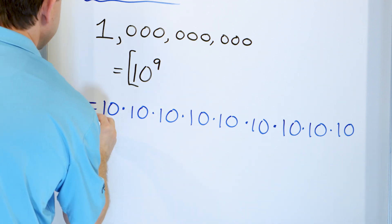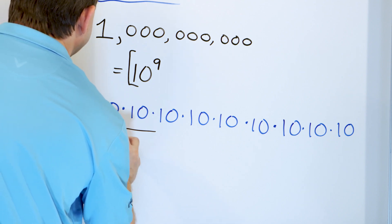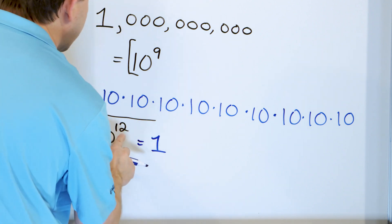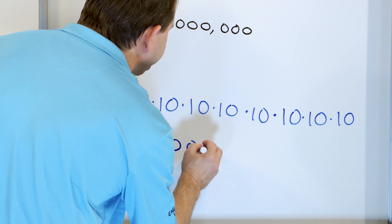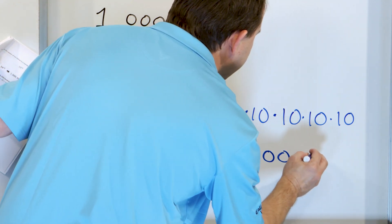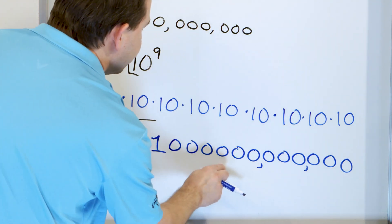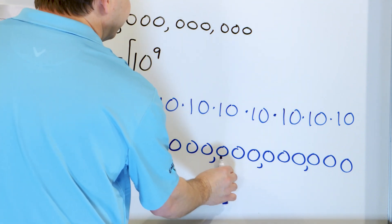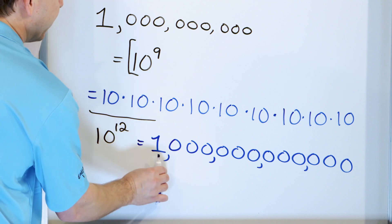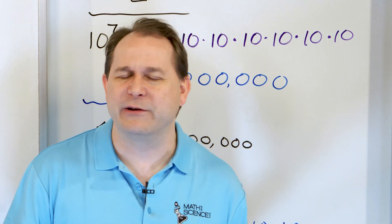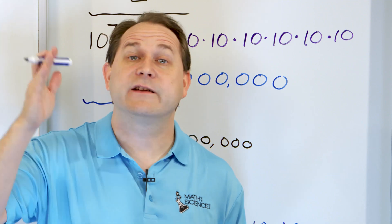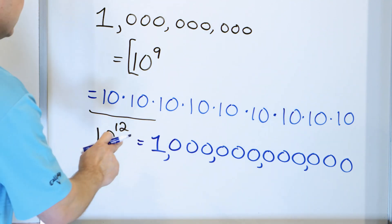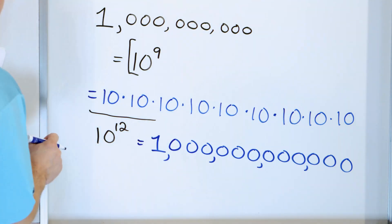Final problem: take 10 to the power of 12 and write it as a full number. We know the pattern: a 1 with 12 zeros after it. Count: 1, 2, 3, 4, 5, 6, 7, 8, 9, 10, 11, 12. Put commas in. If hundreds of thousands is here, hundreds of millions here, and hundreds of billions here, then we're talking about a new number — trillions. So 10^12 is 1 trillion.